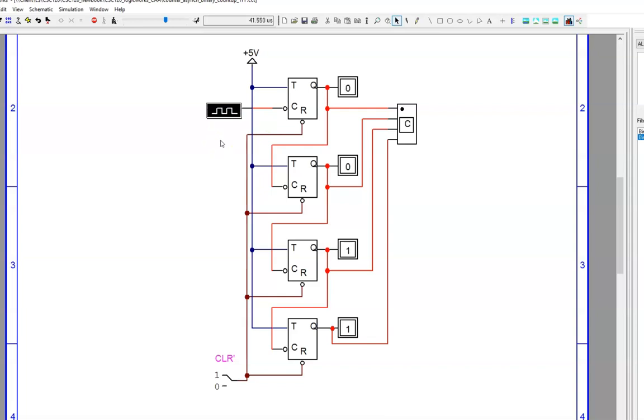Why? Because only that least significant bit needs to change. There are not multiple bits changing in a cascade.